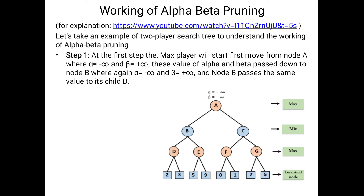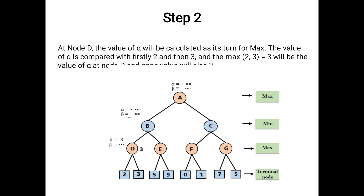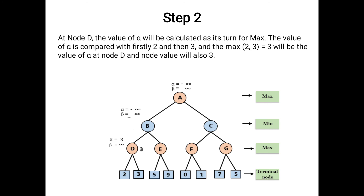With the help of depth-first search, we first visit the root node then move to the left side. We pass the alpha and beta values down to node D. The terminal values of D are 2 and 3; the maximum value is 3, so we update the alpha value to 3 because node D is at the maximum level.